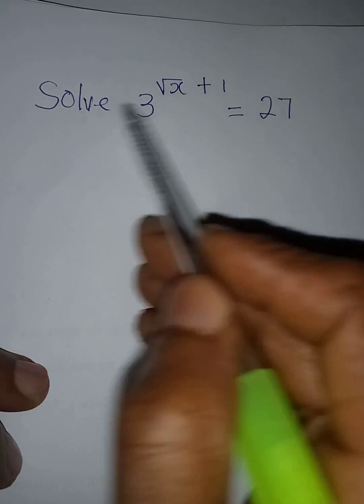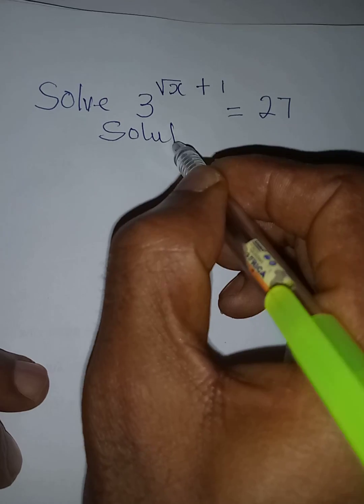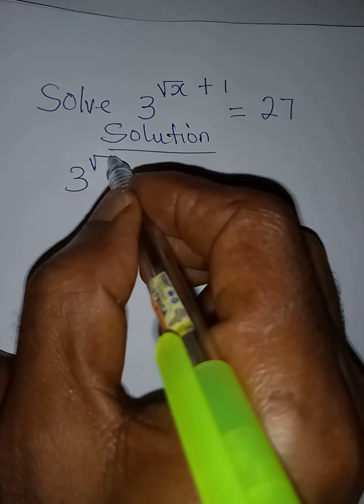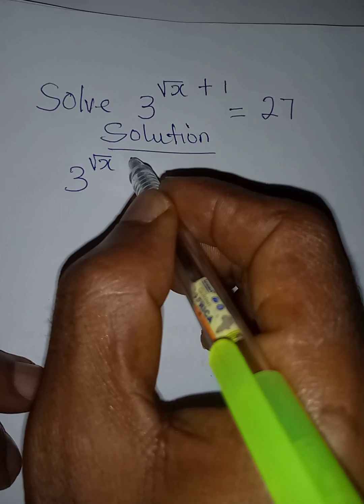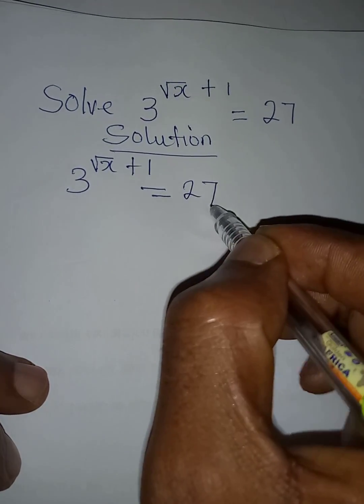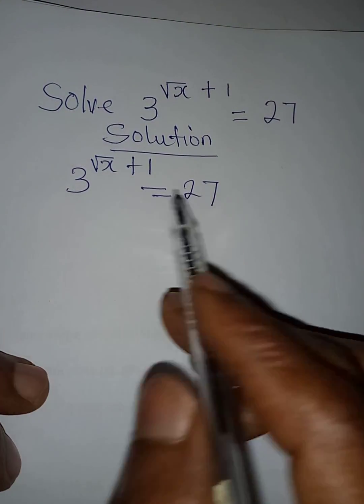Hello everyone, let's work on this problem quickly. Solution: we have 3 to the power of square root of x plus 1 equal to 27. How do we deal with this? The first thing we're going to do is to write 27 in index form.